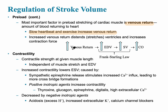Venous return leads to increased filling and then the contractility phase, which increases stroke volume and eventually cardiac output. Contractility is the forcefulness of the heart — it lowers the end-systolic volume by making the heart more forceful, pumping more blood out of the ventricle. The sympathetic nervous system is very important for affecting heart rate and the force of contractility.